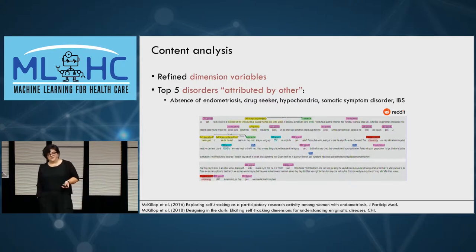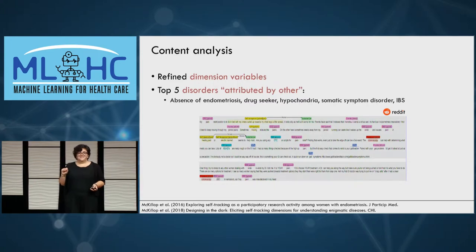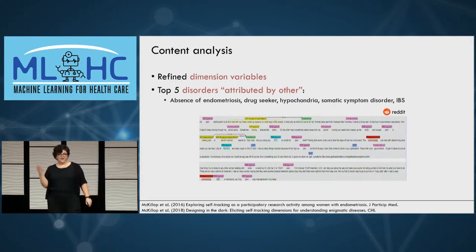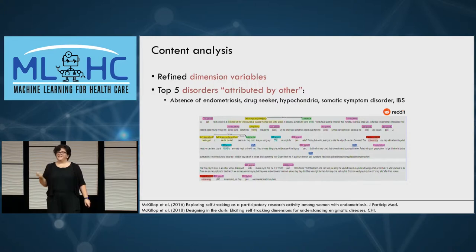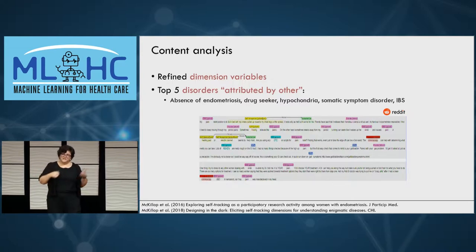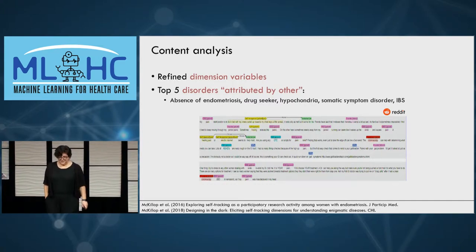The online surveys added more refinement to our focus group findings. The content analysis, covering a much larger number of patients, told us even more. One interesting finding: when we did entity recognition on symptoms and conditions mentioned, some of the most prevalent were things like 'drug-seeker,' 'hypochondria,' and 'somatic symptom disorder.' When we went back and annotated what was attributed by others rather than by patients themselves, we found these were all things the healthcare system was telling them — patients in pain going to the emergency department and being told they're drug-seekers. This is an online community so there are potential biases toward negative healthcare experiences, and we need to take this with a grain of salt.